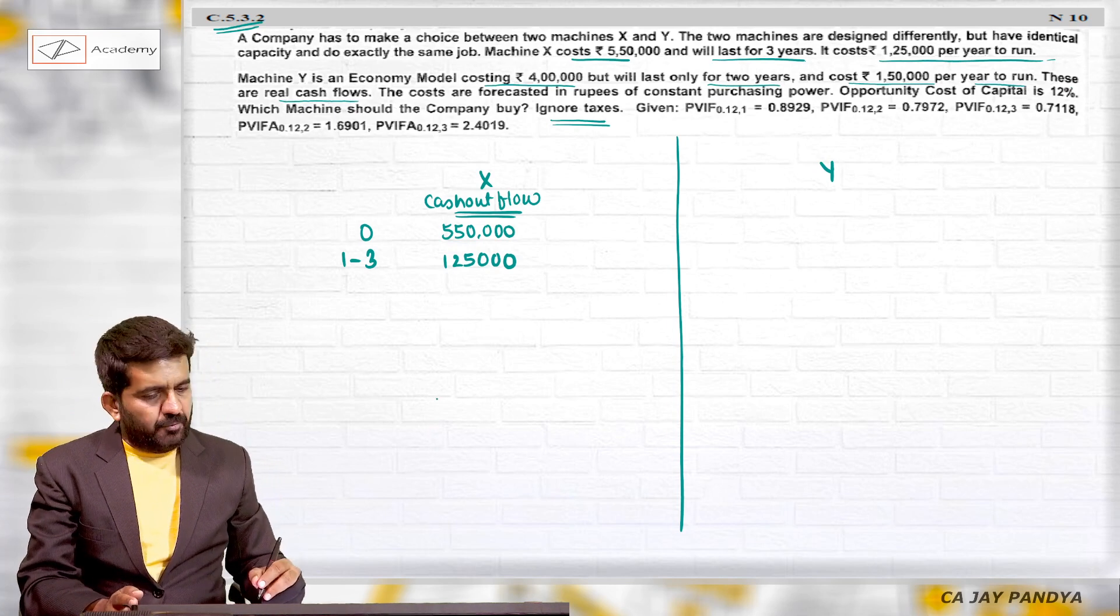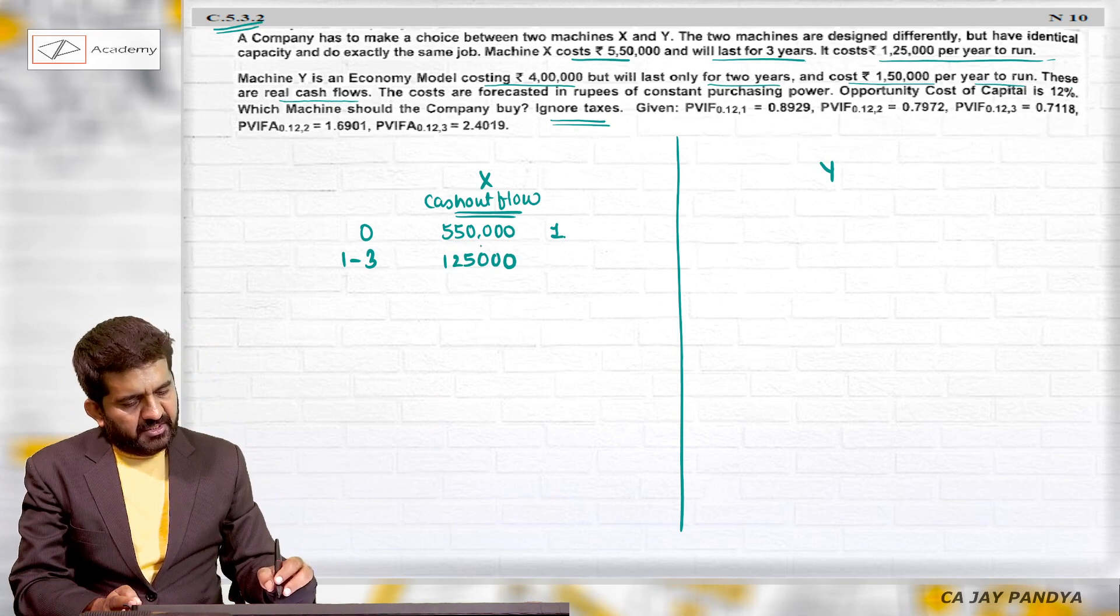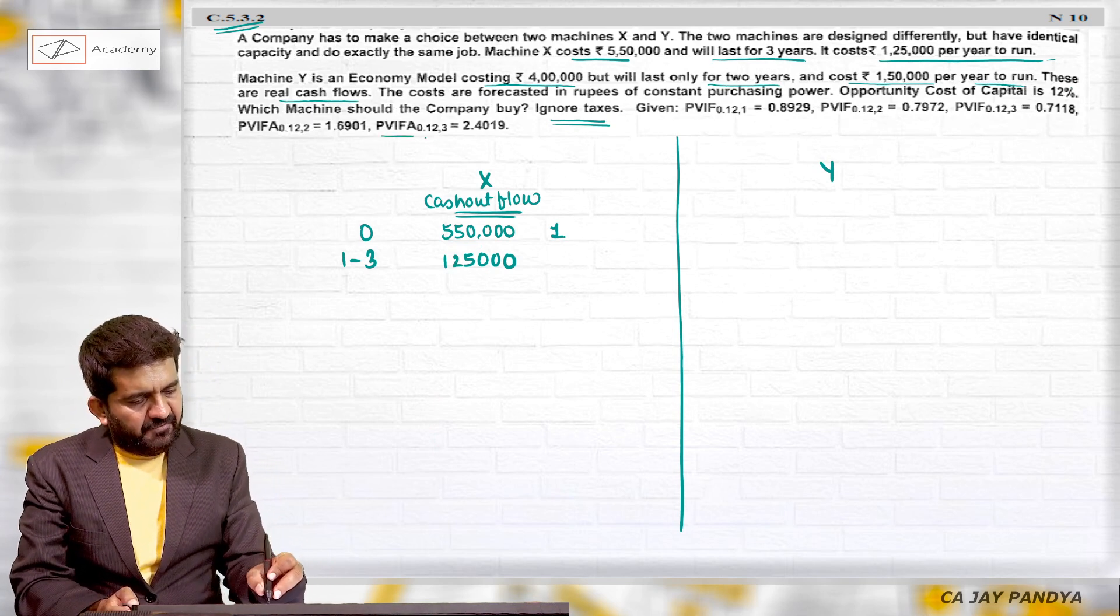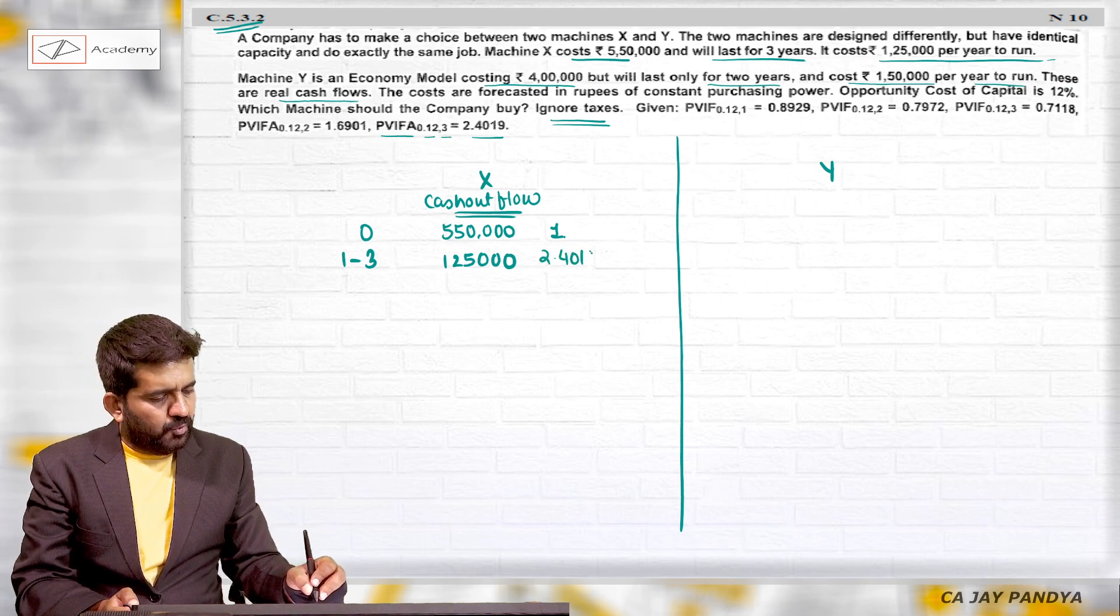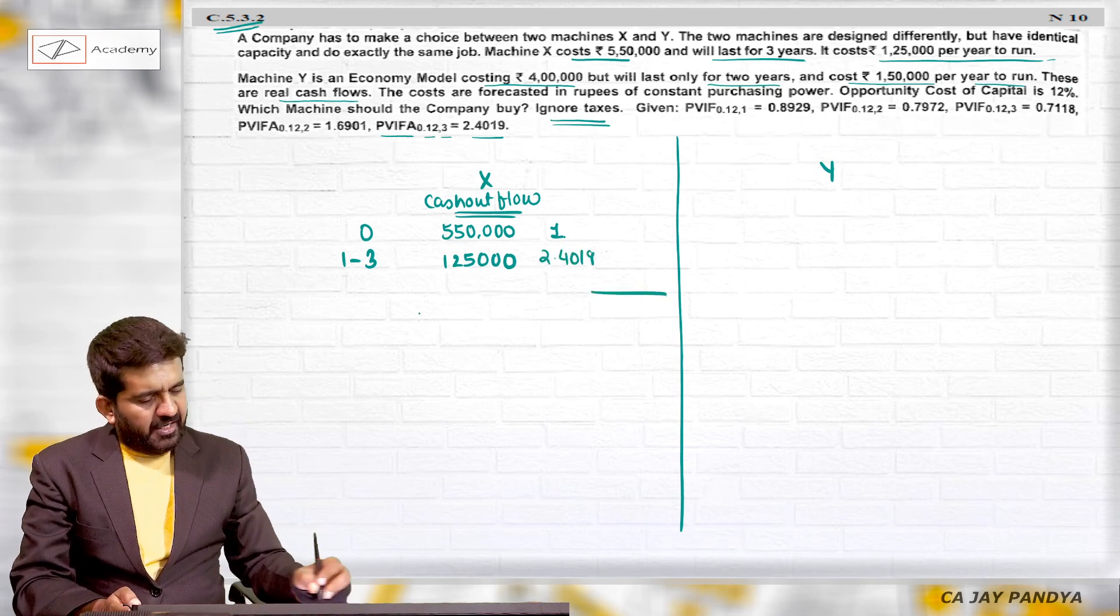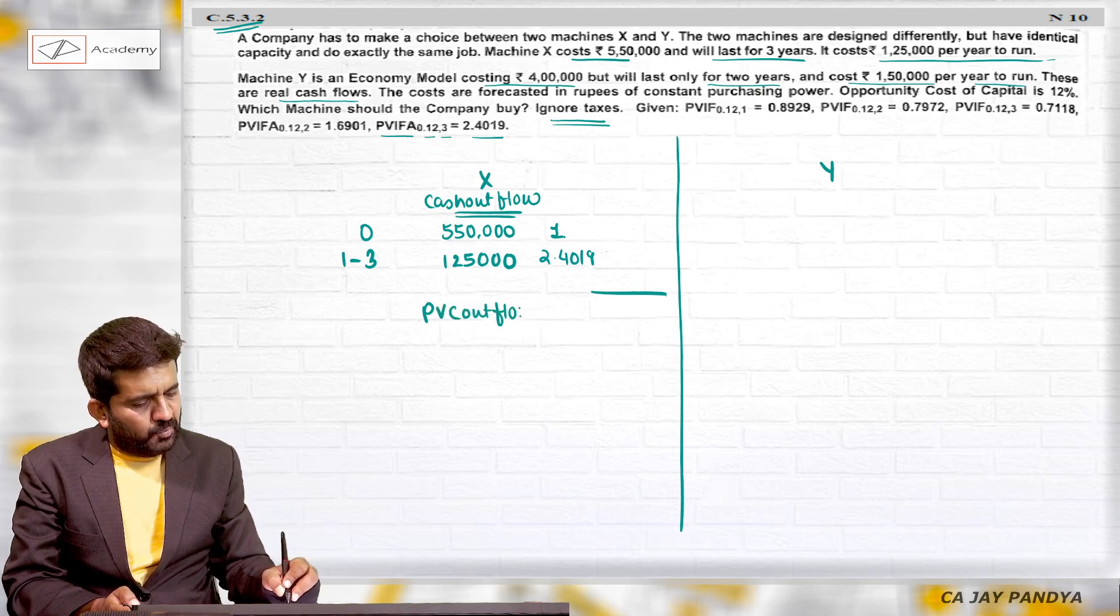I need to find the present value factor. This will be 1 lakh 25,000. I need to take the present value annuity factor of 12% for 3 years, that will be 2.4019. I will be getting the present value of cash outflows only.